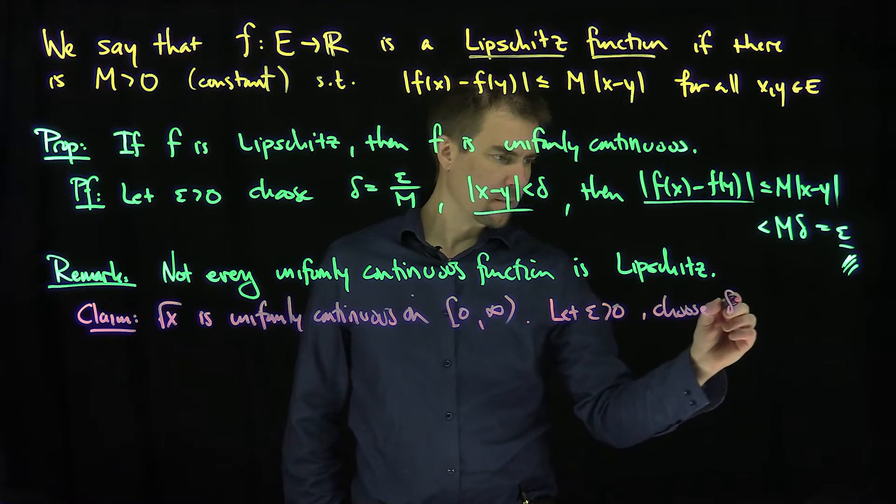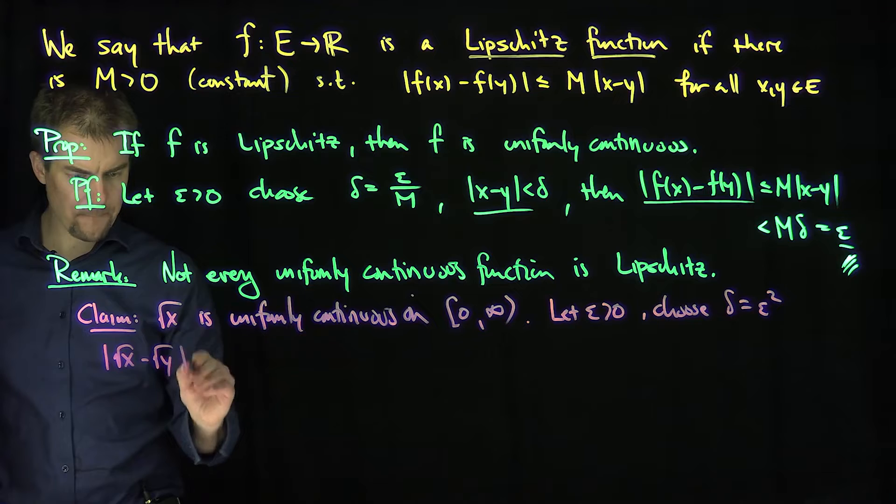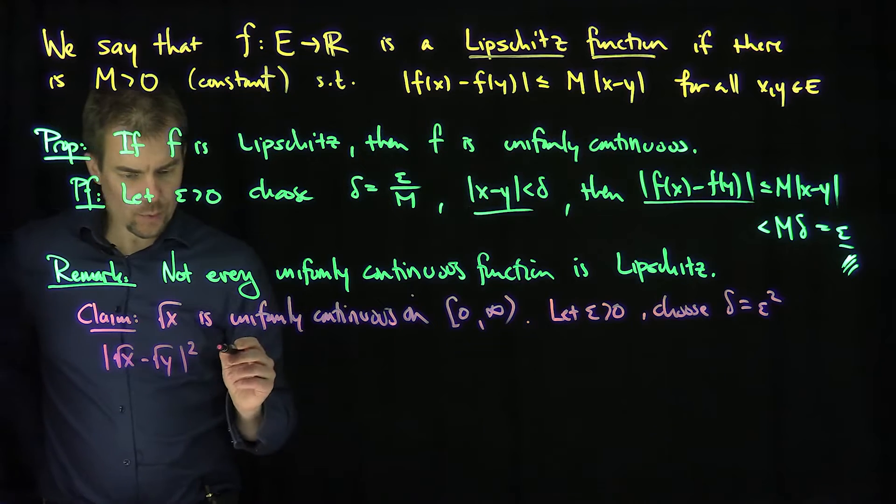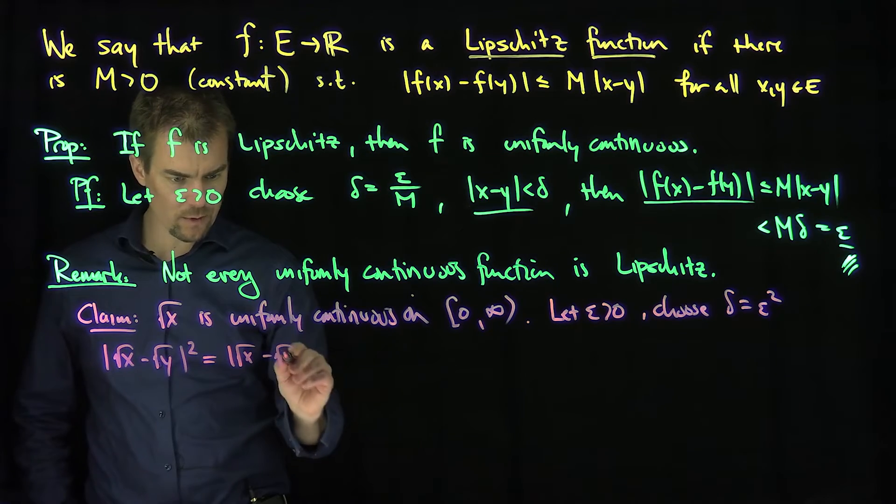The proof is as follows: let epsilon be greater than zero and choose delta to be epsilon squared. Then if we consider (√x - √y)², what can we get? This is going to be equal to √x - √y.